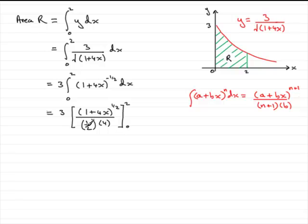Now all we need to do is clean this up. We've got half of 4 is 2. And we can pull the 2 out the front, so we get 3 over 2. So we've got 3 over 2 or 1 and a half. And then we have 1 plus 4x to the power half between those limits again, 0 and 2.